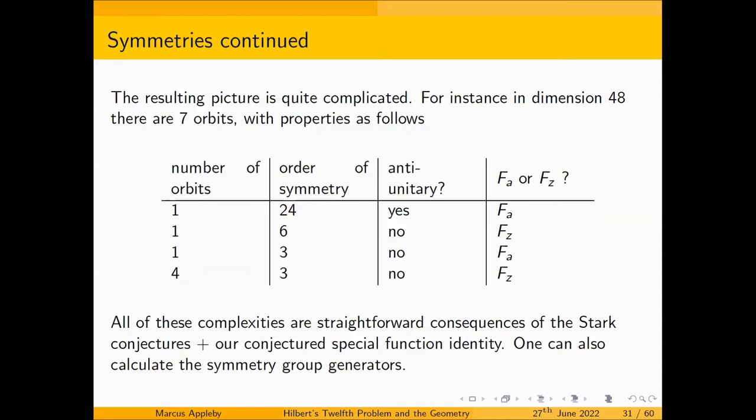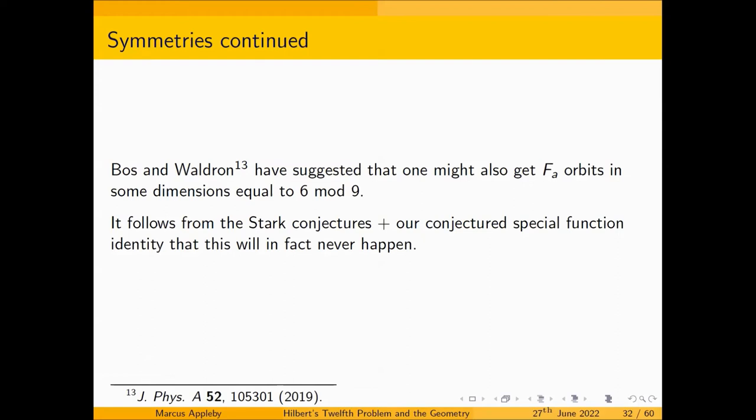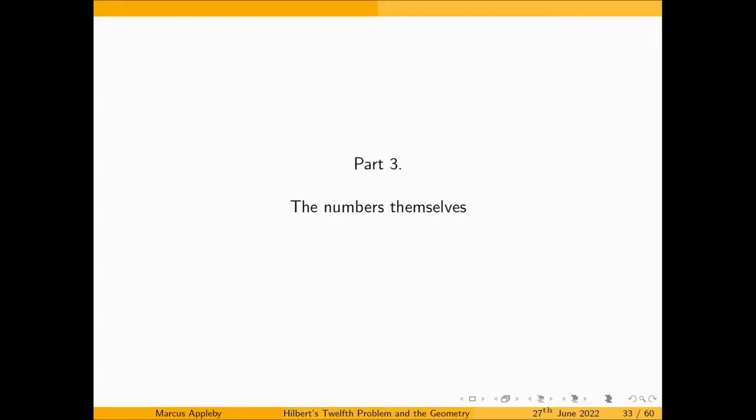Bos and Waldron have suggested one might also get F_a orbits in some dimensions equal to 6 mod 9 — the phenomenon shouldn't be confined to 3 mod 9. Again, you can understand from our conjectures just why no such SICs have ever been observed and why it doesn't happen. So we can explain a lot, and we can use the conjectures to actually calculate SICs and to predict the SIC phenomenology, as it might be called.